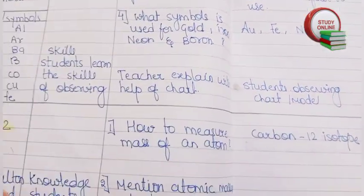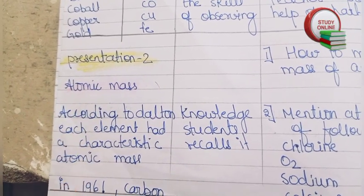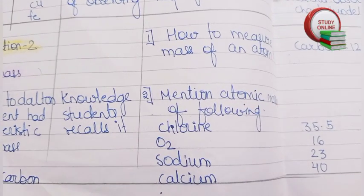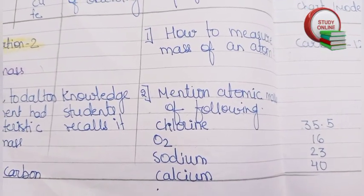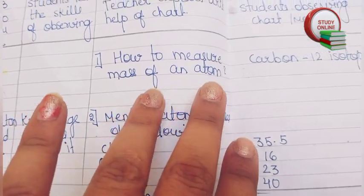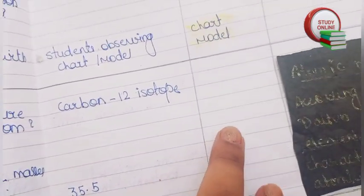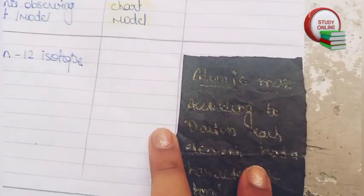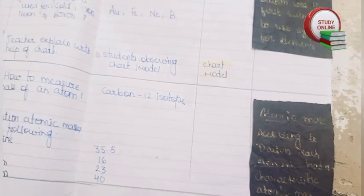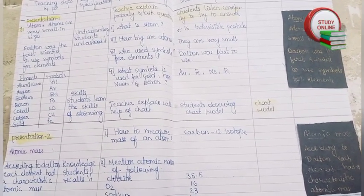In Presentation Two, the teacher has to explain atomic mass. Here you can see the questions related to that: how to measure the mass of an atom, and mention the atomic mass of the following elements. Here are the expected answers from students, and here is the blackboard work where the teacher writes all the main points.